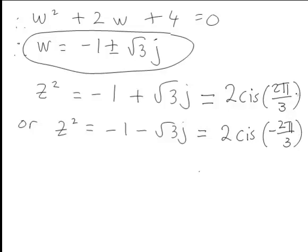We need to find the two square roots of 2 cis(2π/3) to get two solutions to our equation, and the two square roots of 2 cis(-2π/3) to find the other two solutions.